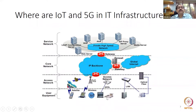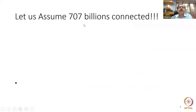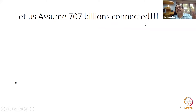Let us assume 707 billion connected — 700 billion IoT and 7 billion our own devices. I wrote it as '707' like a Boeing 707 or 737. What will happen if 707 billion devices are connected today?